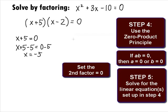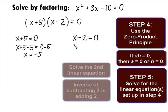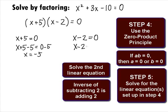Setting the second factor equal to 0, we get x minus 2 equals 0. We can solve this equation by doing the inverse of subtracting and add 2 to both sides. This will give us x minus 2 plus 2 equals 0 plus 2, which leads us to our second solution of x equals 2.